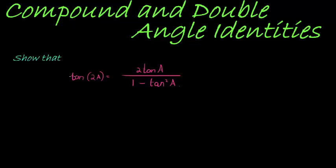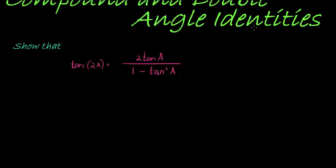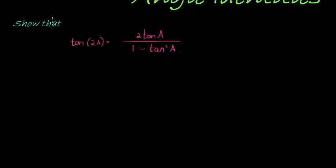In other words, the double angle formula for tan is given by this expression. Now it's not very difficult as a matter of fact. All we need to do is go from tan 2A to this side, and we simply use what we know.